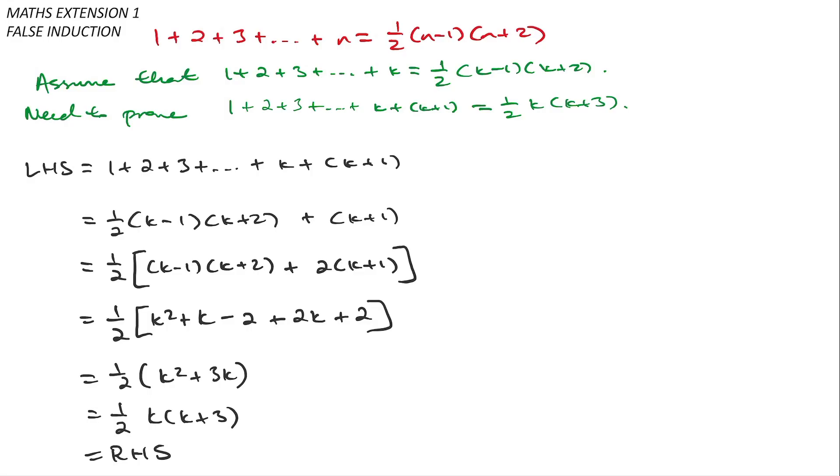What you'll see here is that I have a statement: the sum of the first n integers is allegedly equal to a half n minus 1 times n plus 2, which I know is not equal to. But I'm going to try doing induction. I'm going to make my assumptions and start doing my inductive step.